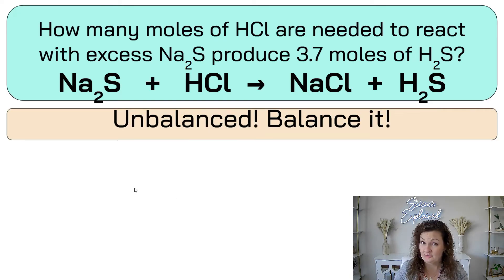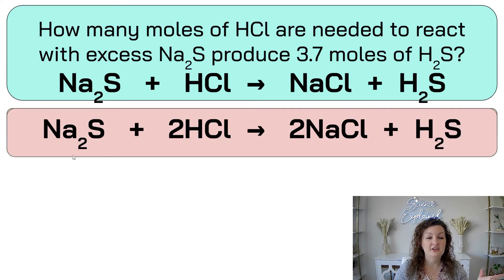Okay, I want you to try this one start to finish. It says, how many moles of HCl are needed to react with excess Na2S to produce 3.7 moles of H2S? Here's your equation. Pause the video and see if you can get this one right start to finish. All right, let's go ahead and look at the answer. First things first, is it balanced? It is not balanced, so you had to balance this one first. If you didn't, you probably got the answer incorrect, because you need the right mole ratios.